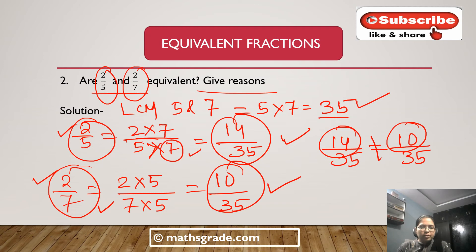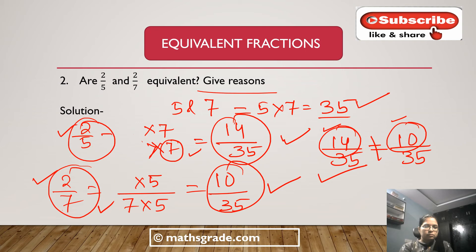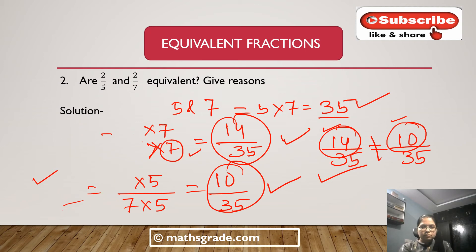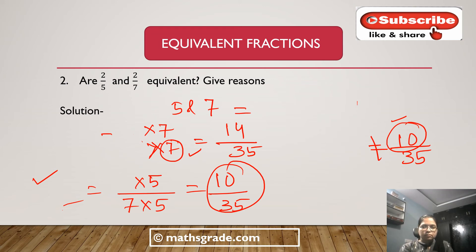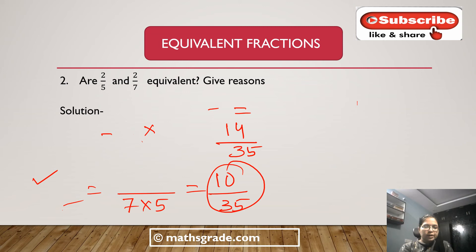Give the reason why: because in 2/5 we get numerator 14 in the equivalent fraction 14/35, and in 2/7 we get numerator 10 in the equivalent fraction 10/35. Since 14 is not equal to 10, the fractions 2/5 and 2/7 are not equivalent fractions. To find an equivalent fraction, we multiply the same number in both the numerator and denominator — the fraction we get is called the equivalent fraction of the given fraction.